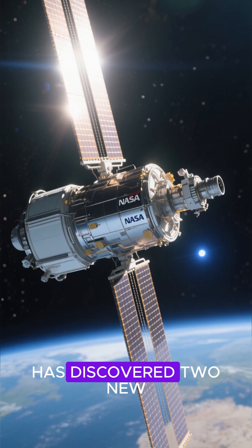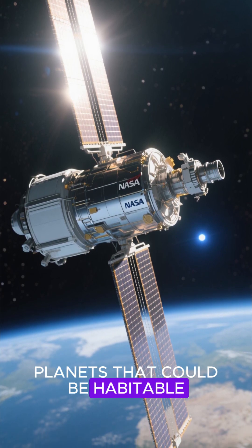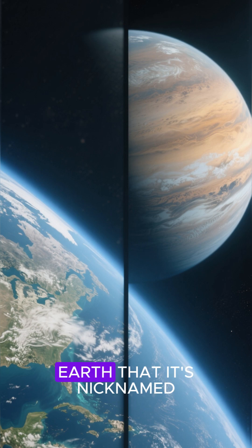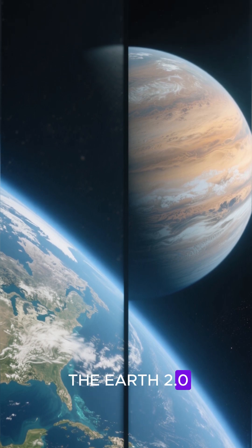NASA's Kepler Space Telescope has discovered two new planets that could be habitable, and one of them is so similar to Earth that it's nicknamed the Earth 2.0.